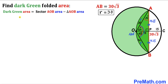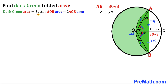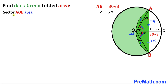The dark green region area equals the sector AOB area minus the triangle AOB area. So our task is to calculate both the sector AOB area and the triangle AOB area.